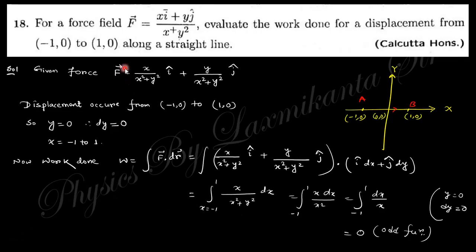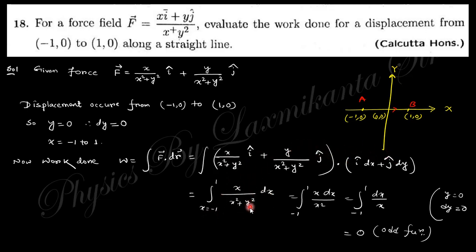Next question: given a force field, evaluate the work done for a displacement from (−1, 0) to (1, 0) along a straight line. Along this path y is constant (y = 0) and dy = 0, while x varies from −1 to 1. Work done W = ∫F·dr; with y = 0 the force simplifies, and integrating dx/x from −1 to 1 gives zero because the integrand is an odd function. Total work done is 0.